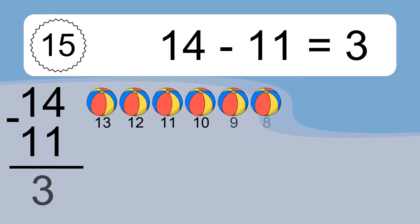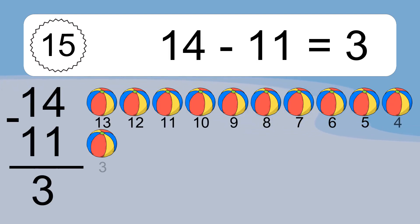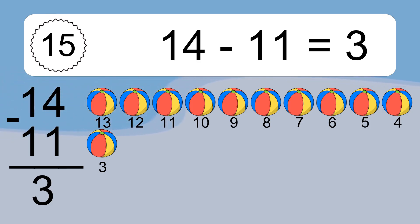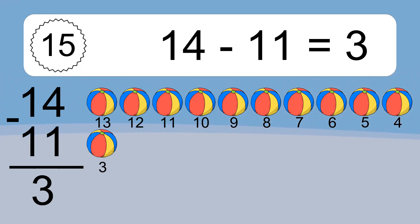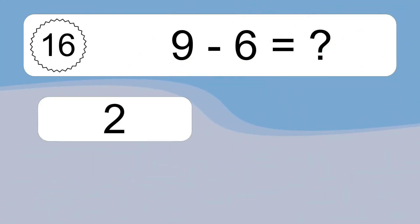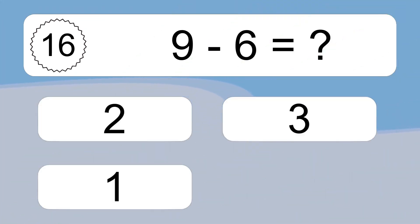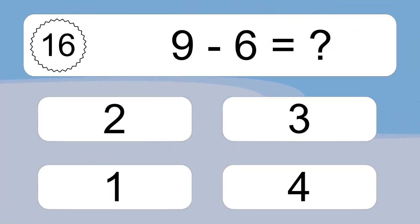14 minus 11 equals what? 14 minus 11 equals 3. Let's count it: 13, 12, 11, 10, 9, 8, 7, 6, 5, 4, 3.